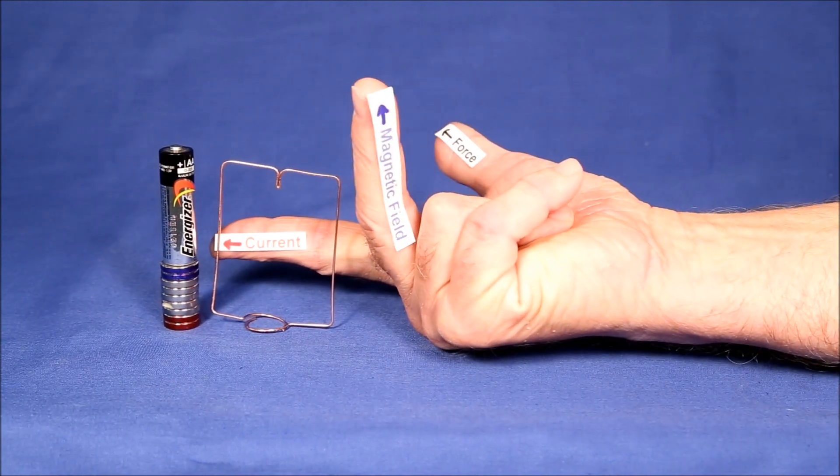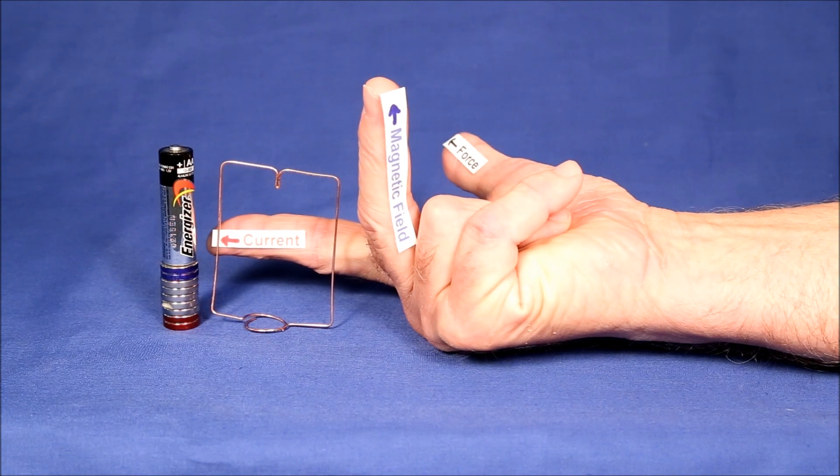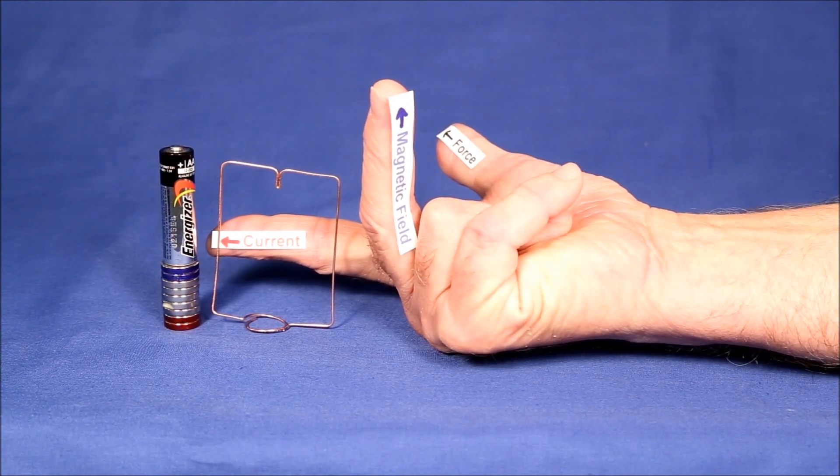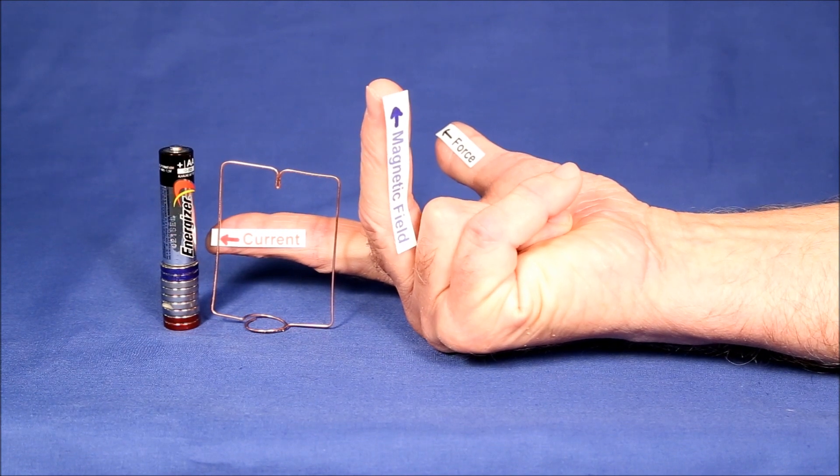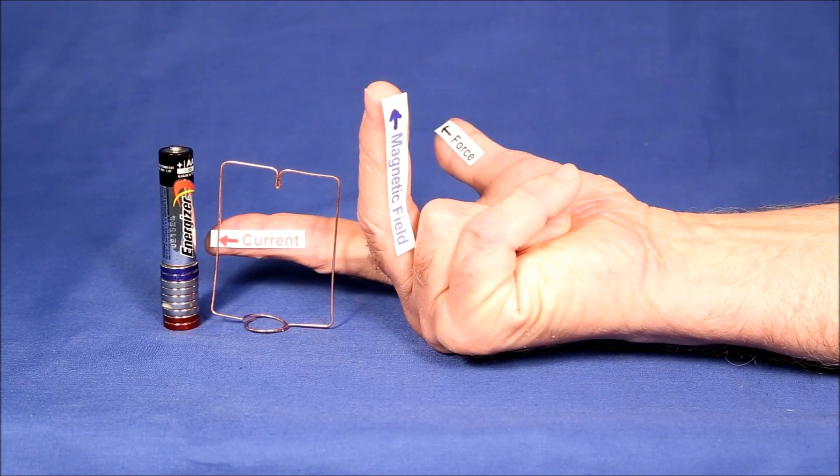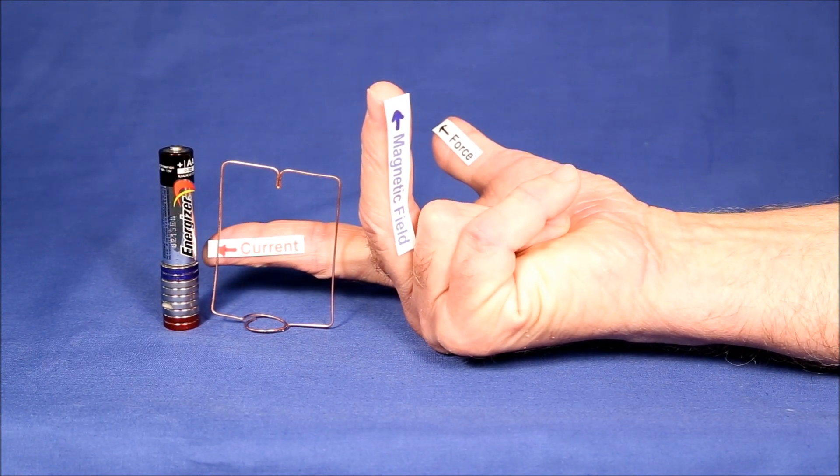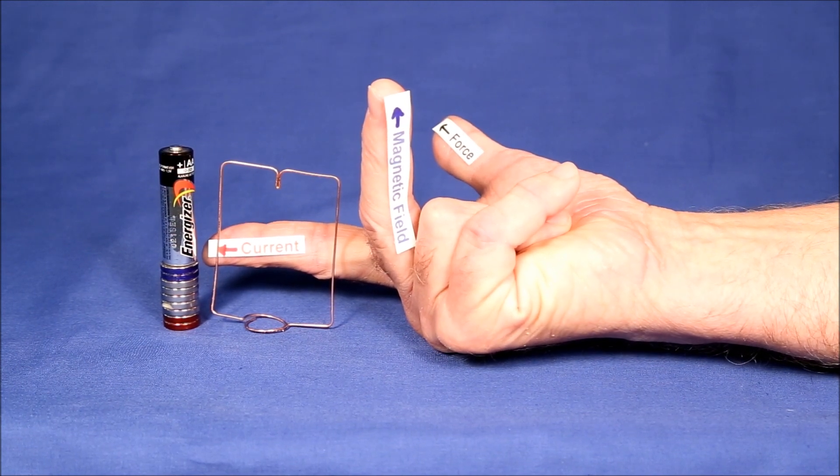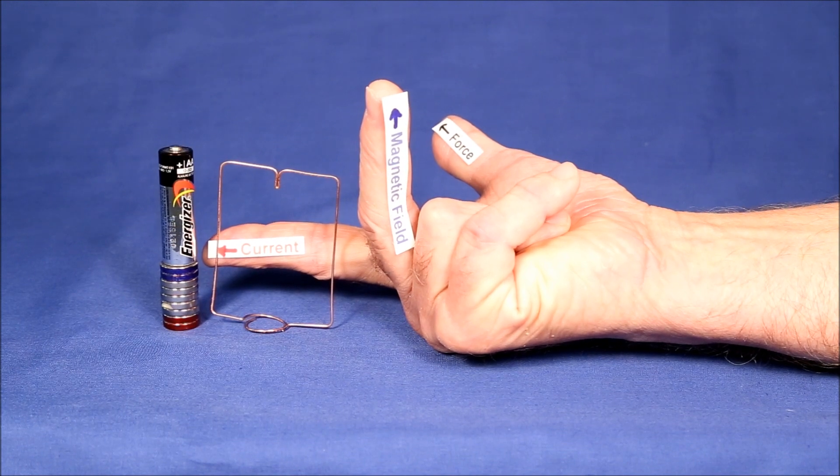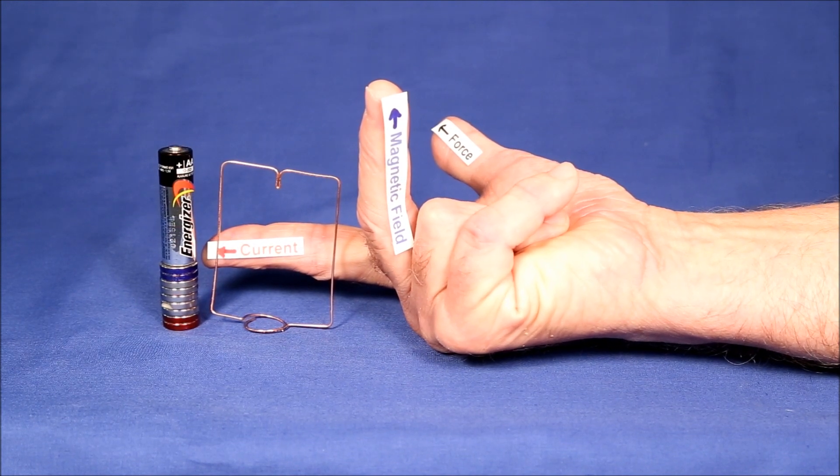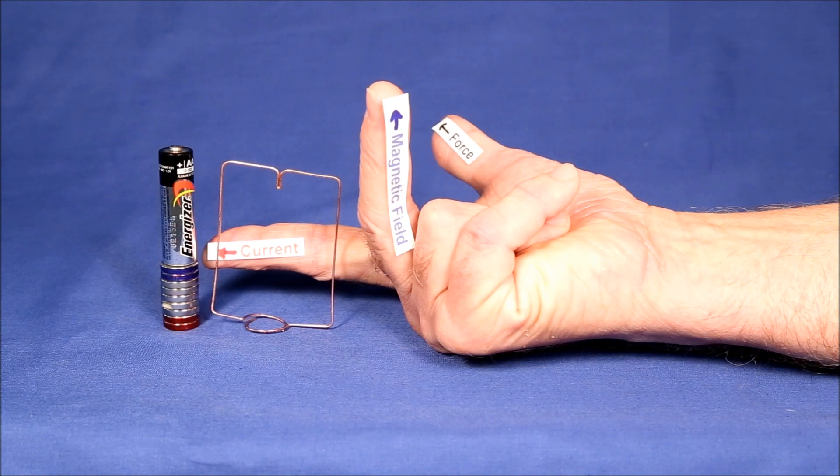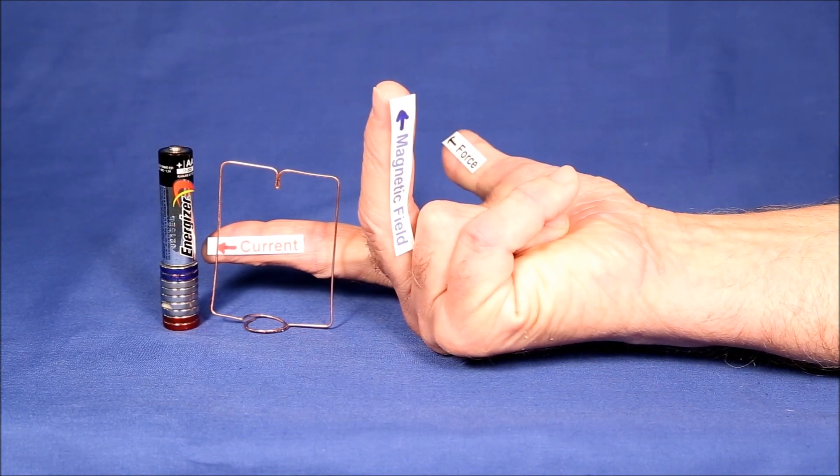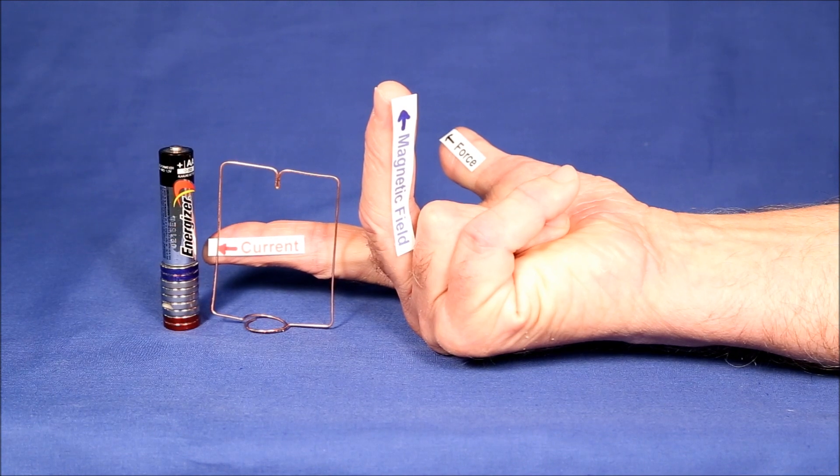The common rule for determining the direction of the force is called the right hand rule. Now I know labeling my fingers like this looks a little silly, but it makes things as clear as possible. You point your index finger or pointer finger in the direction of current flow. Your middle finger points in the direction of the magnetic field, where up in this case is towards the magnetic north of the magnets, and your thumb will point in the direction of the force.